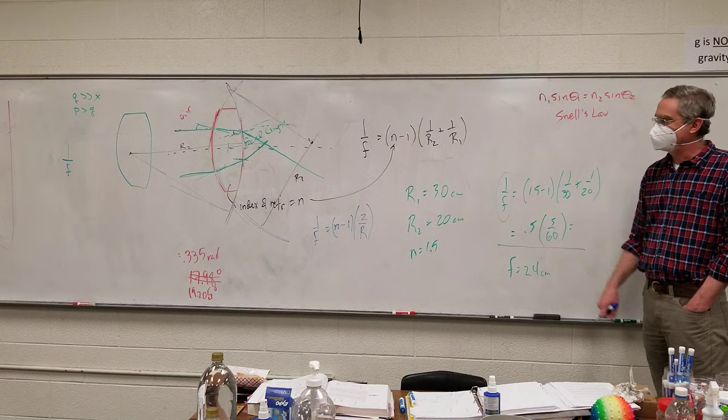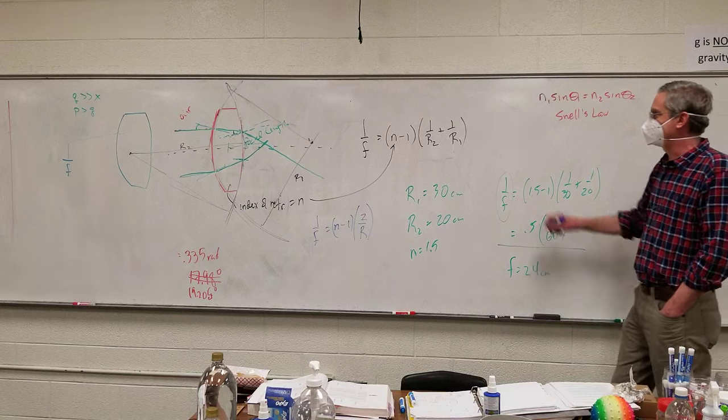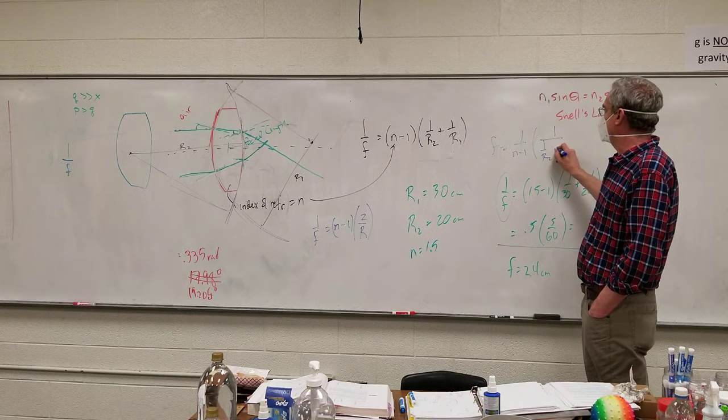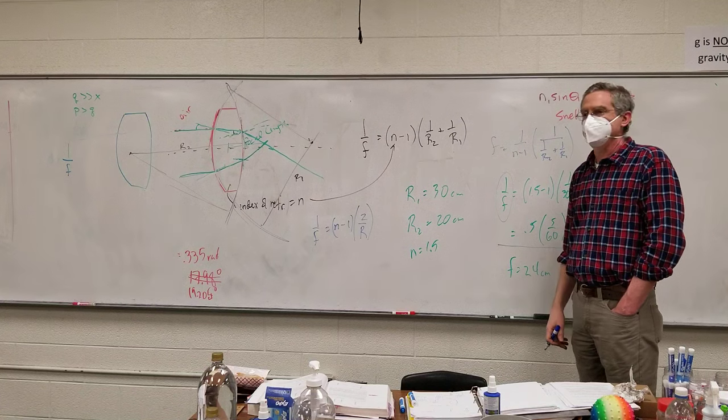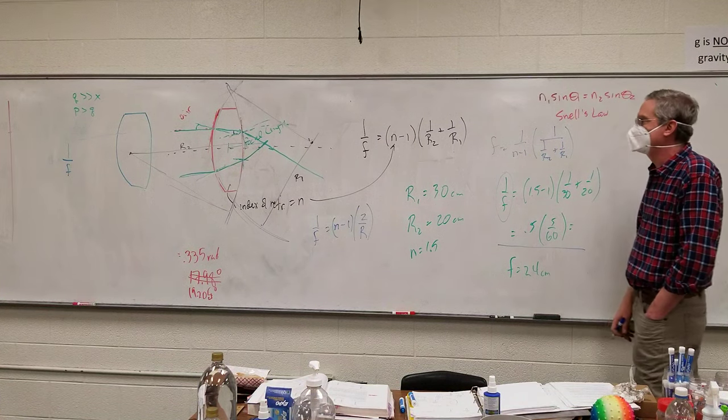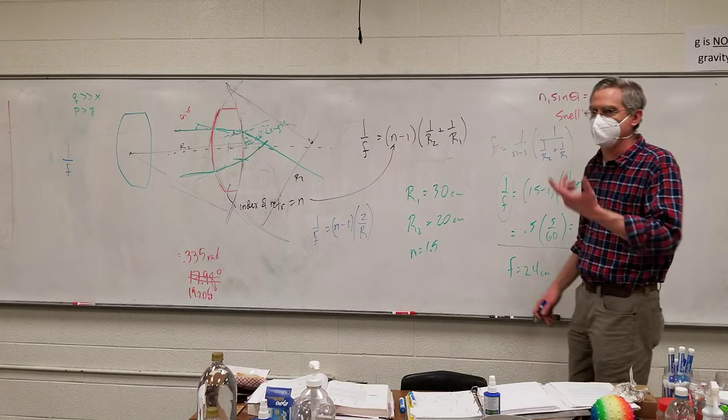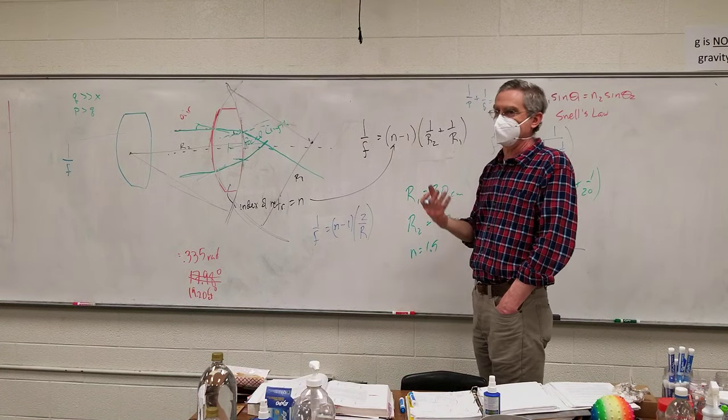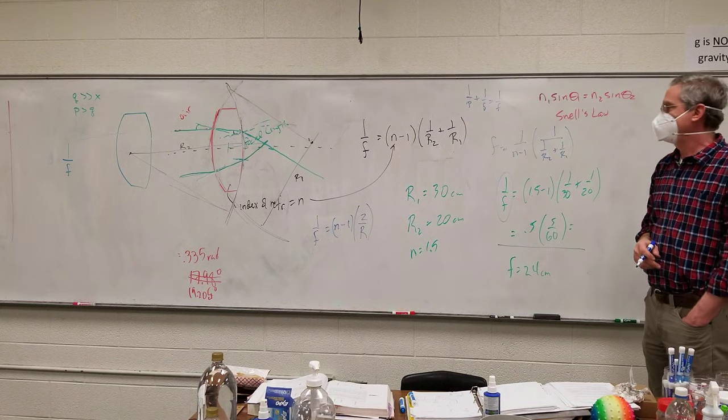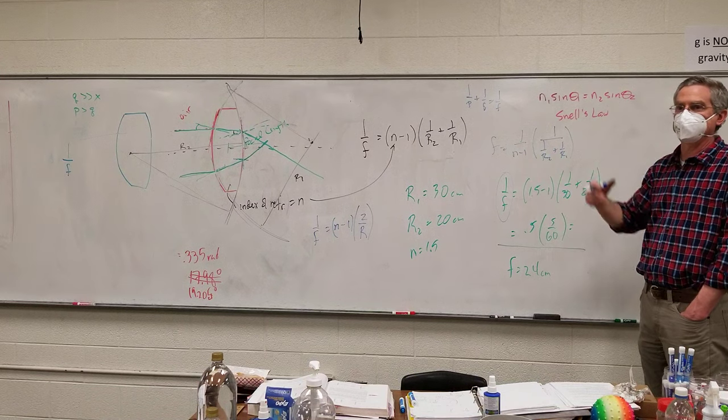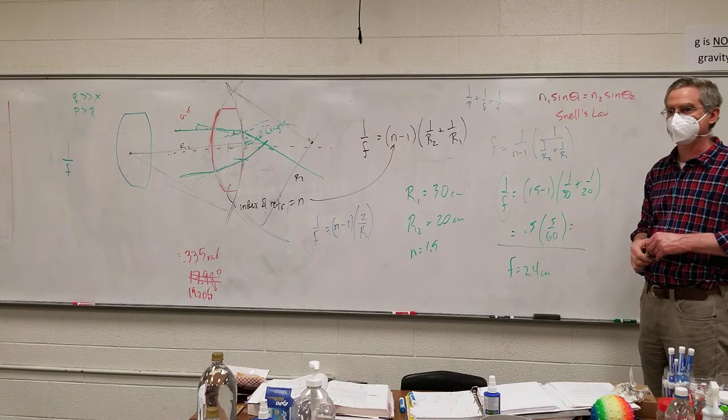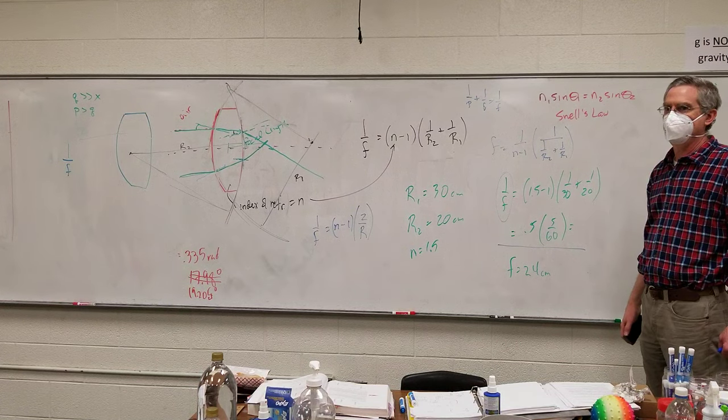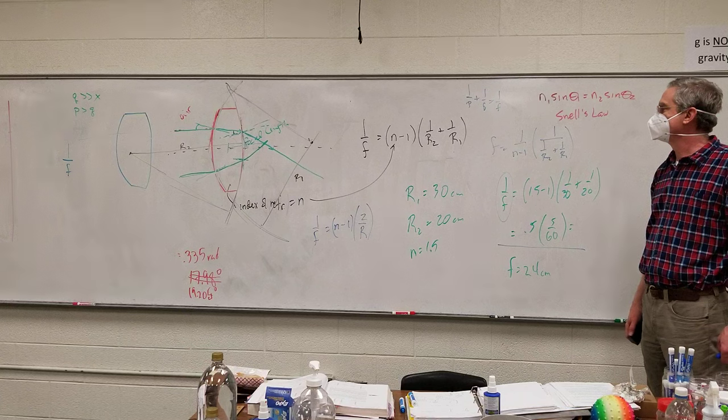Why don't they just go ahead and put the focal length equal to 1 over N minus 1, then 1 over R2 plus 1 over R1? I guess it looks more intimidating. It's sort of setting up for that same type structure that we see for 1 over P plus 1 over Q equals 1 over F. That's a bit like, you know, you do 1 over R1 and just forget to take the reciprocal of it. On the test, that takes points away.